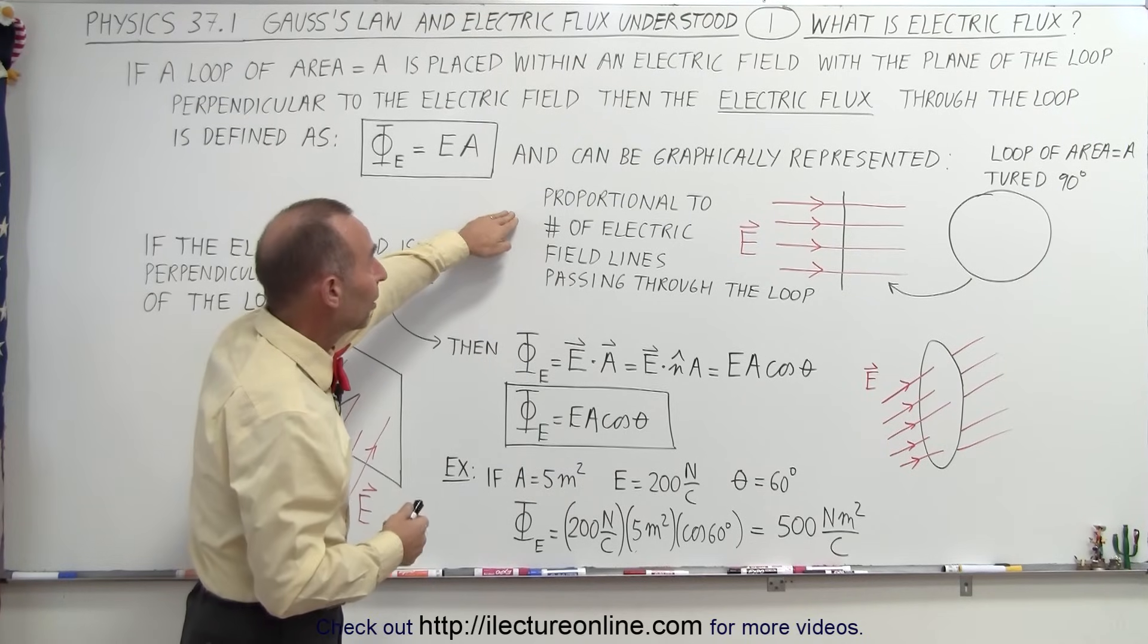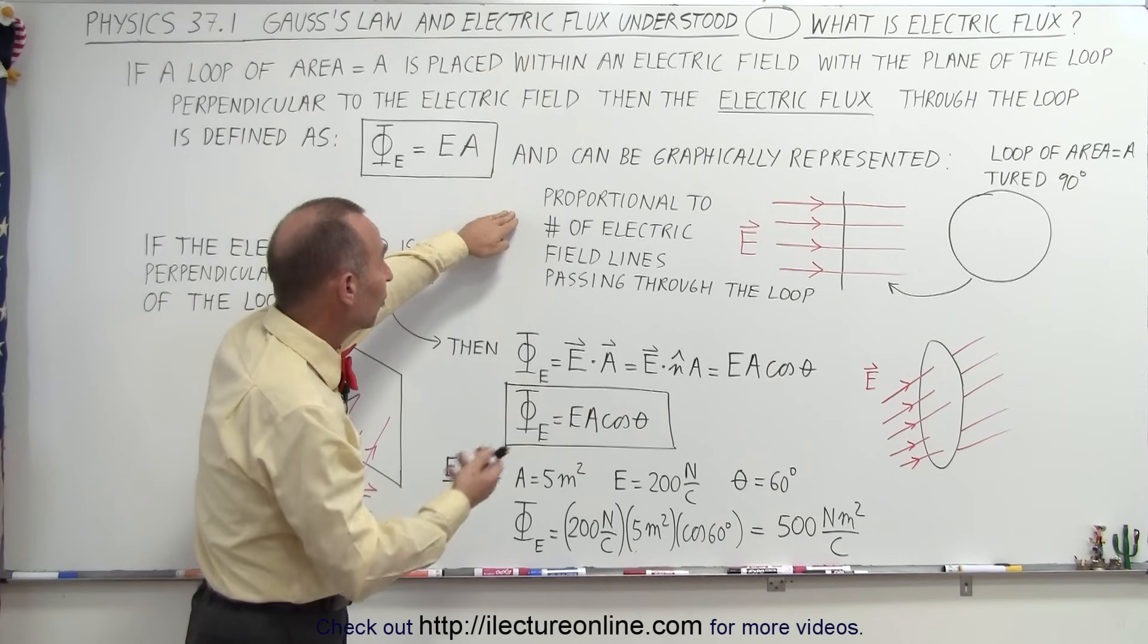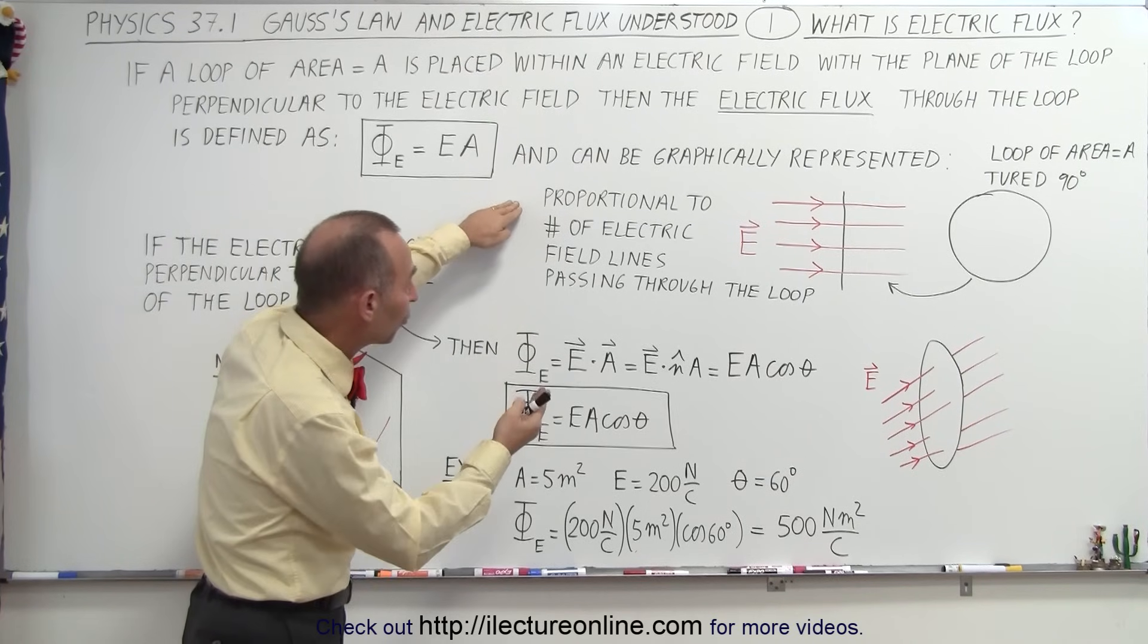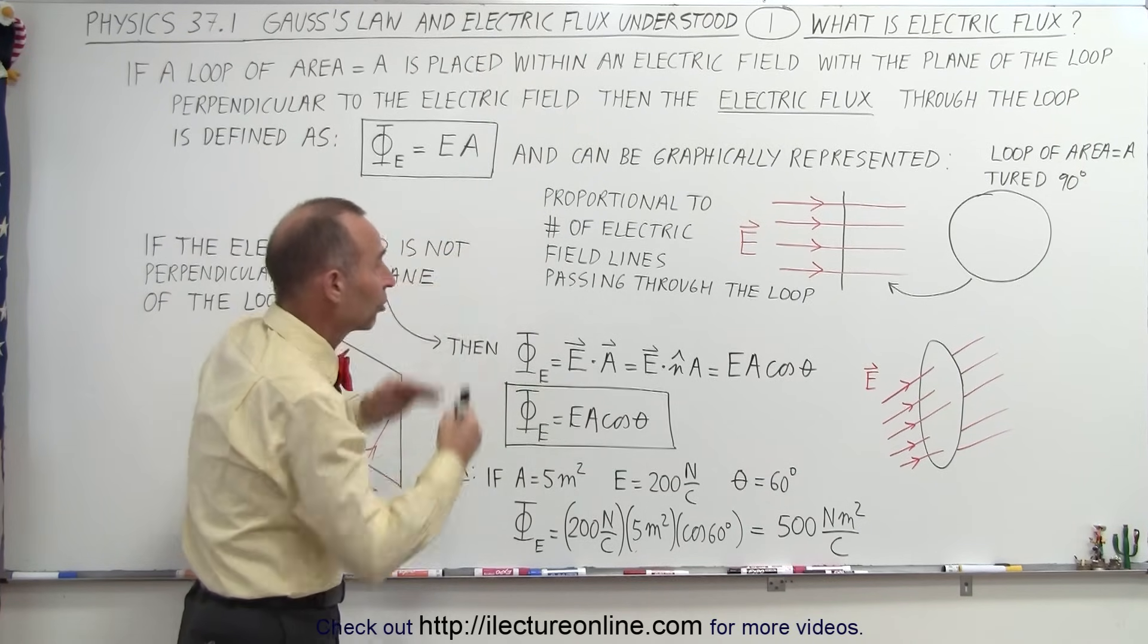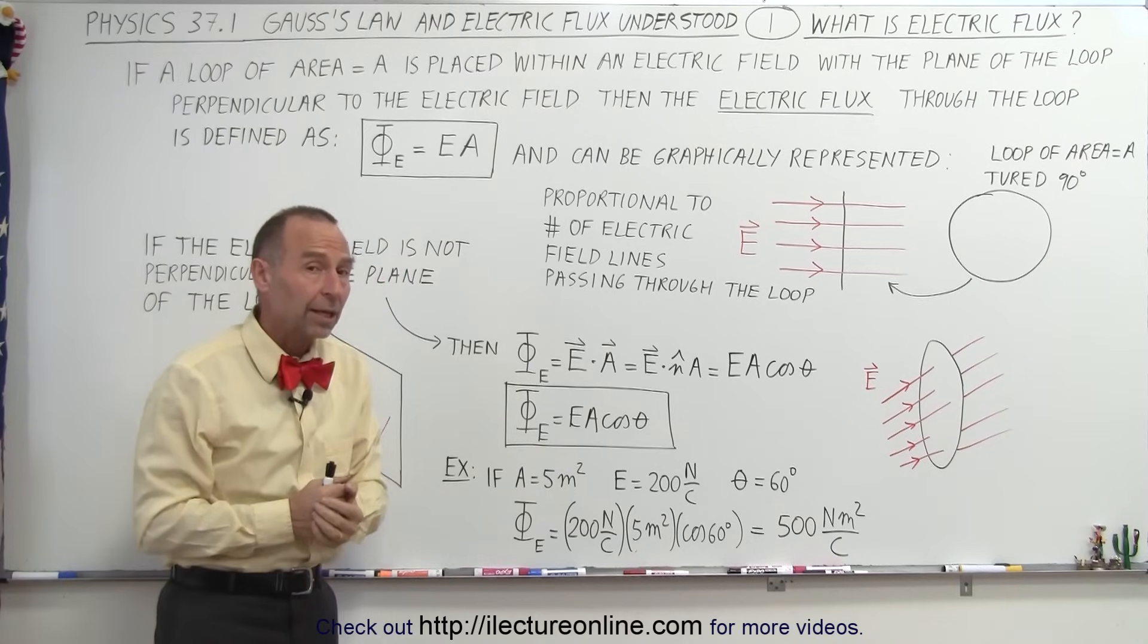We can graphically represent it such that the electric flux is proportional to the number of electric field lines passing through the loop, and that's probably the best way to think about it.